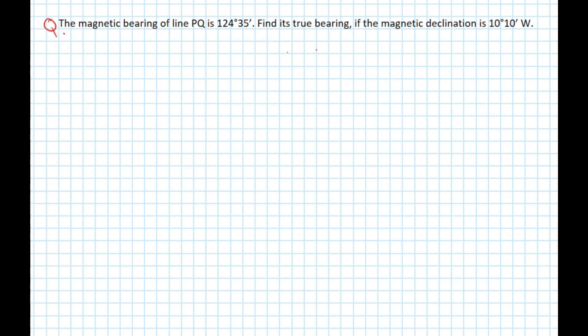Hello everyone, welcome to Engineered. Today we'll be solving a problem related to engineering survey. This particular problem is related to bearing. The question says the magnetic bearing of line PQ is 124 degrees 35 minutes and find the true bearing if the magnetic declination is 10 degrees 10 minutes west. Our formula for this is: true bearing equals magnetic bearing plus or minus declination.